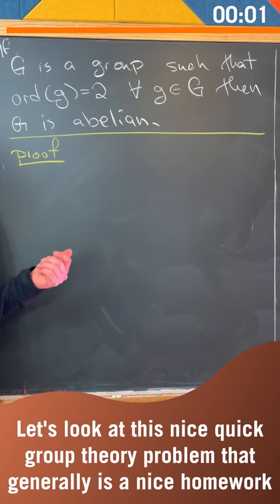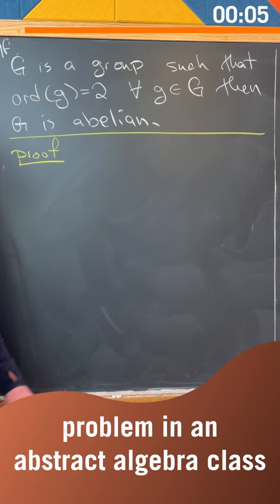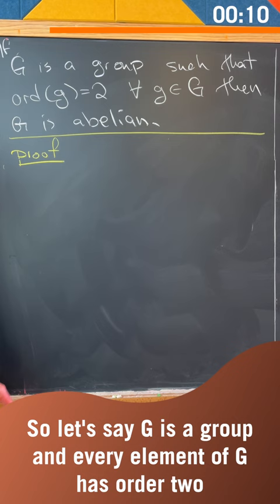Let's look at this nice quick group theory problem that generally is a nice homework problem in an abstract algebra class. So let's say G is a group and every element of G has order 2, then we want to show that G is abelian.